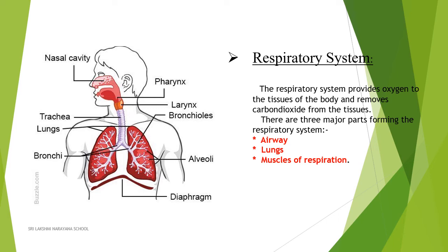In the airways, the parts included are the nasal cavity, pharynx, larynx, trachea, bronchi, and lungs. Lungs are the primary organs of the respiratory system. They are located near the backbone on both sides of the heart.